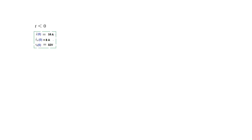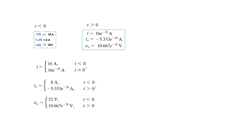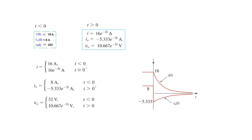We had two sets of values: T less than 0 (steady state) and T greater than 0 (transient). Combining them, the final answer is: I equals 16 A for T less than 0, and 16 e^(−2T) for T greater than 0. Similarly for I₀ and V₀. Looking at the plots, the I(T) graph is continuous with no break, but I₀(T) is discontinuous — it jumps from 8 amperes to approximately minus 5.33.